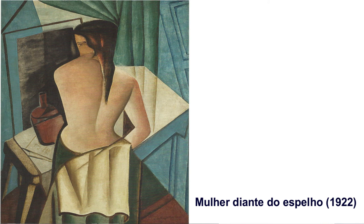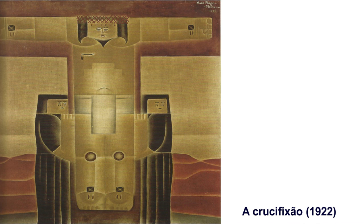Mulher Diante do Espelho mudou totalmente o estilo: ele deixa o inchaço tipicamente expressionista que marcou parte de sua obra e de Dica Valcante, e trabalha com linhas sinuosas. O geometrismo dentro de linhas sinuosas e um nu artístico — a moça desnuda da cintura para cima, de costas para nós — marcam a tela.